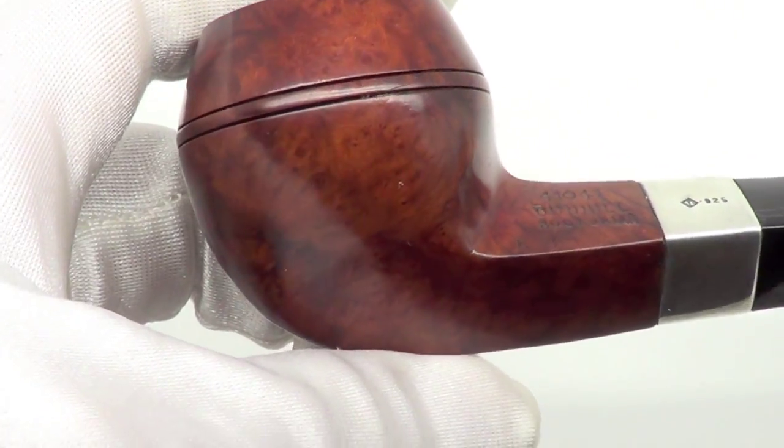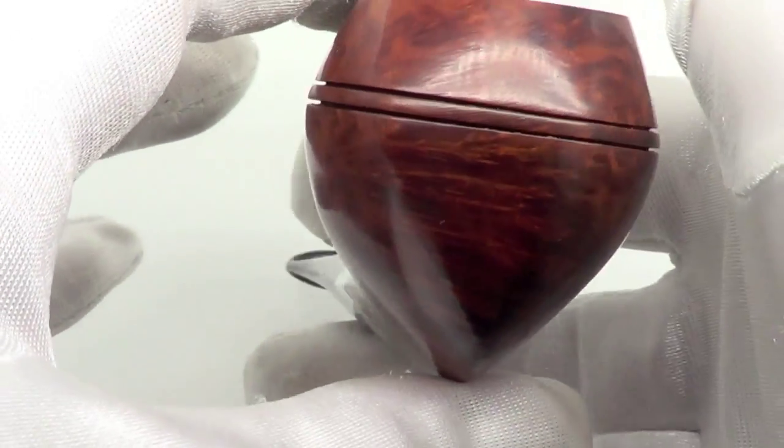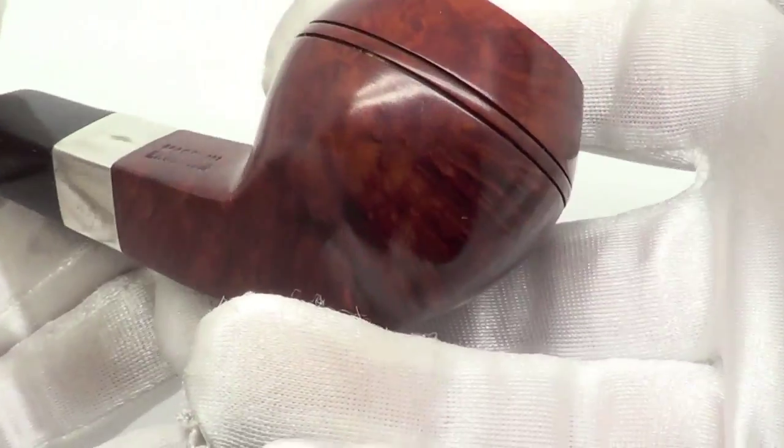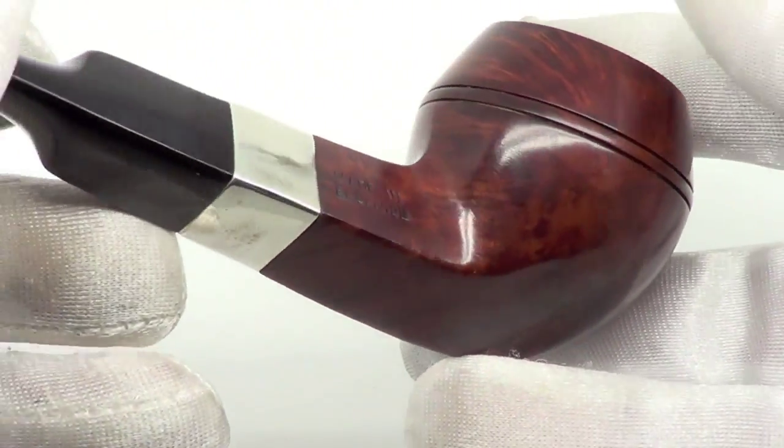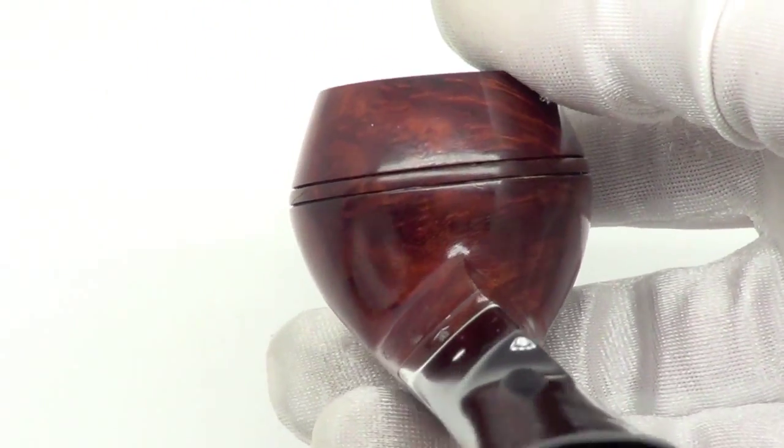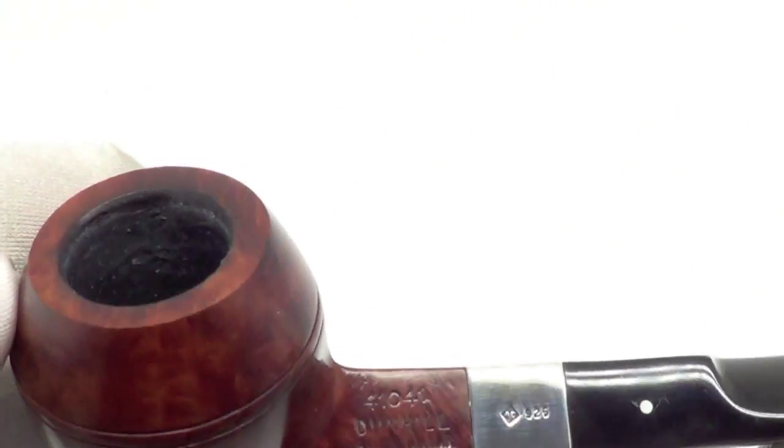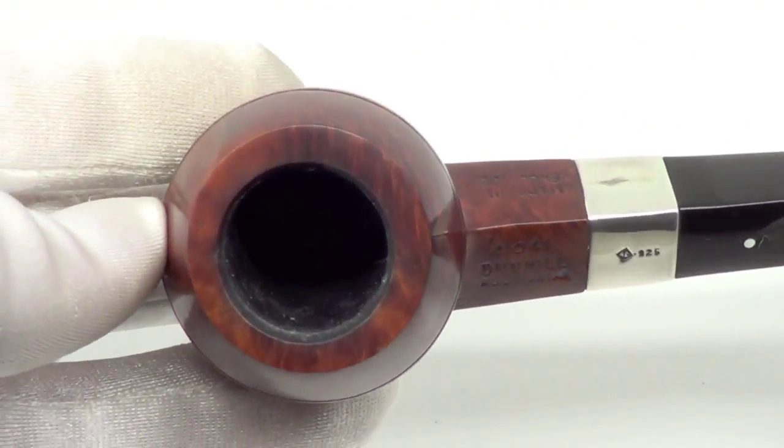With that root briar grade, you get a nice smooth finish showing off some cross grain on the front and back of the bowl and bird's eye grain on the sides. Rim is char-free and bowl walls are nice and thick.